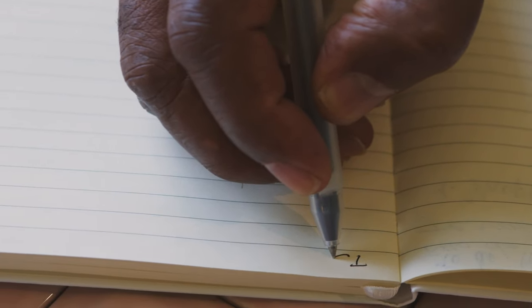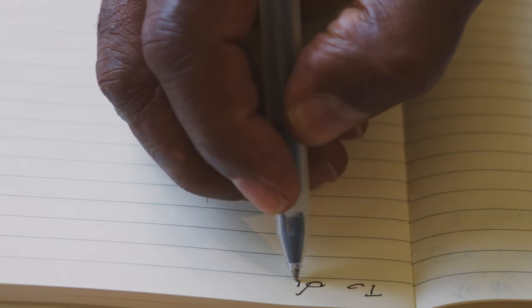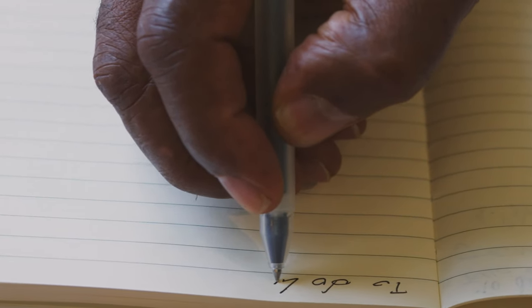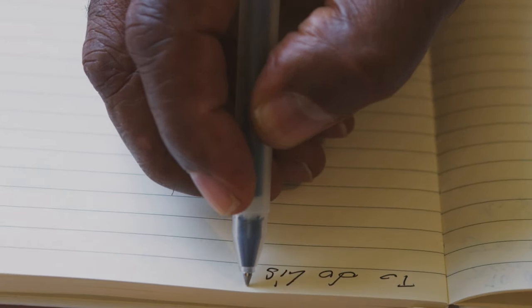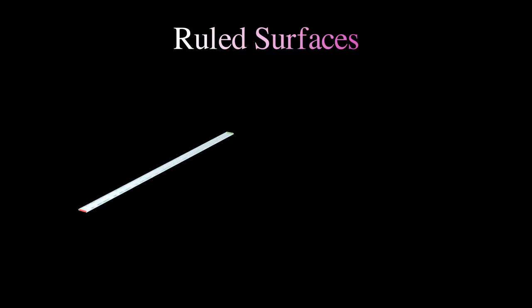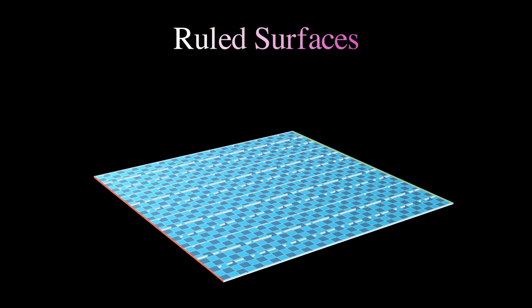A great example of a ruled surface is ruled paper that you use to write on. And in fact, the faded lines that help guide your writing are examples of rulings on the paper. They're examples of rulings on a plane.